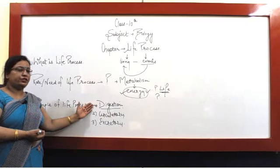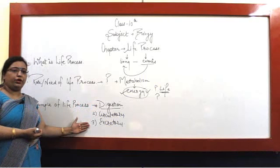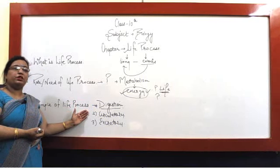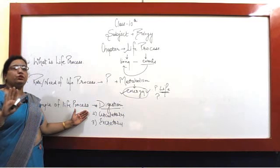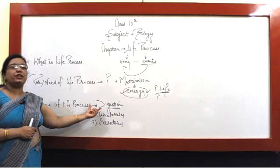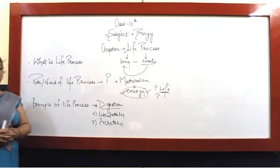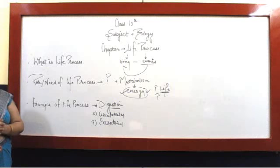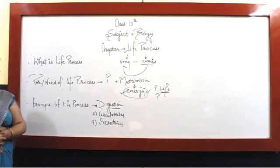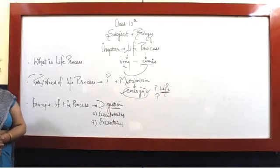Jaisa ki aapne dekha. Digestive, circulatory, excretory. Ye sub-systems apne apne cells ko use karke, tissues ko use karke, organs ko use karke process karenge. Which makes us to sustain life. Aur hum survive karenge. Hum life processes karenge. Aur apne day-to-day activities ko energetically perform kar pahenge.